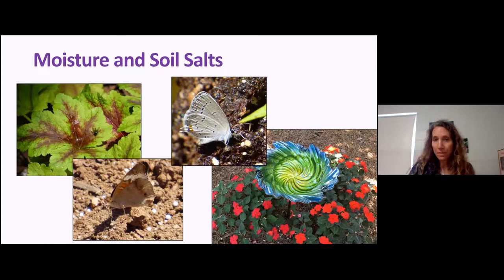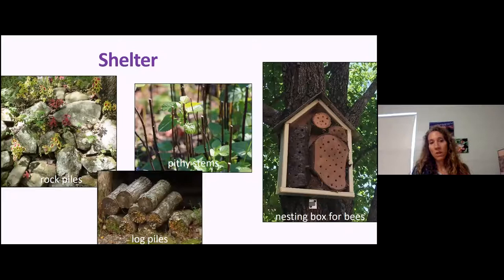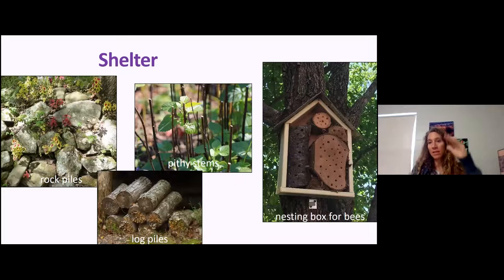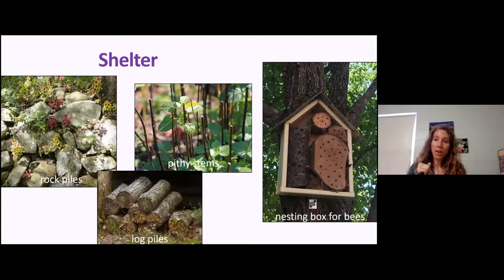Shelter includes rock piles, log piles, nesting boxes for bees, and pithy stems. This is a great time of year to start cutting things back. I don't cut back in fall — I let it sit for the winter, and then this time of year I'll cut back. Where there's sages with pithy stems, I cut it about a foot to a foot and a half off the ground, not all the way down. The reason is those stems are sort of hollowed out and can be used for nesting sites. The plant grows up around it, and that resource is hidden under the foliage — it won't be a visual problem because new spring growth will grow up around it.